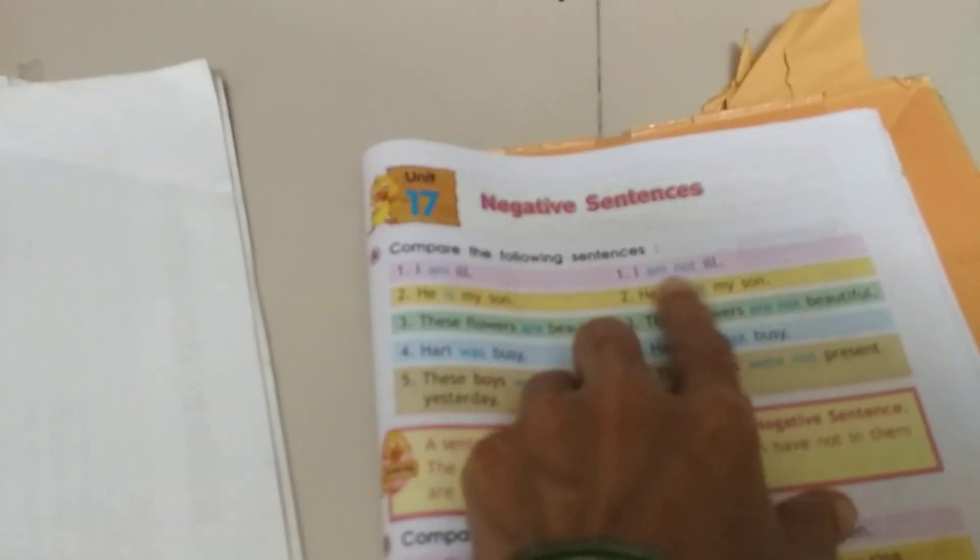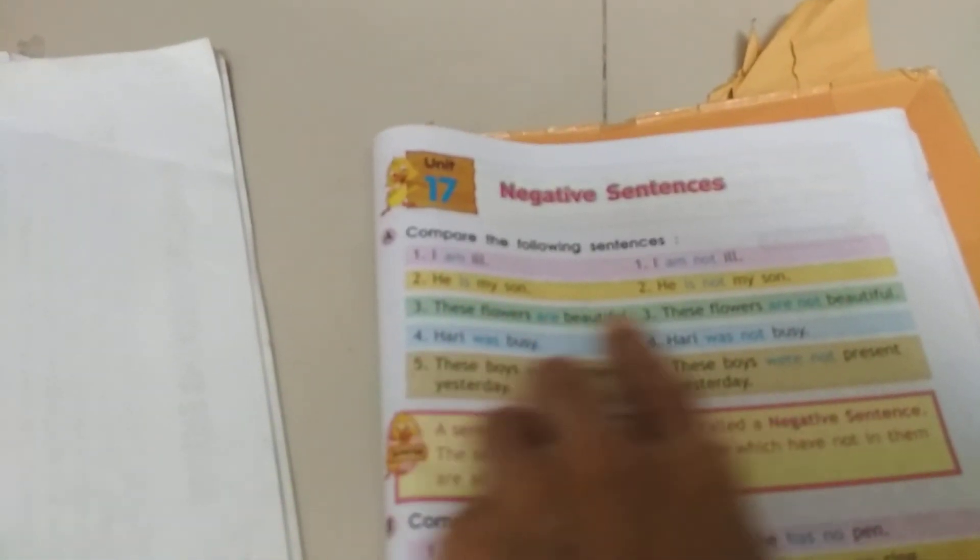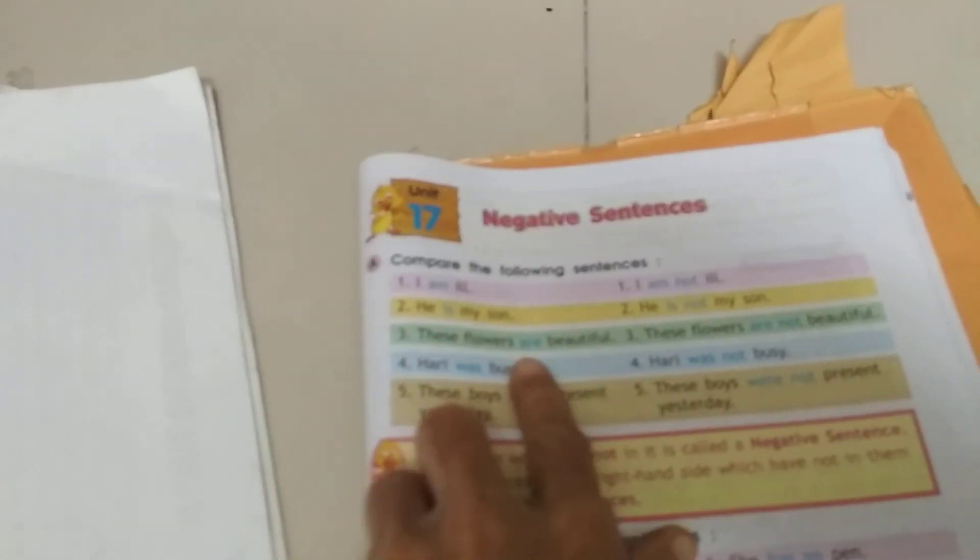Okay, now let's go to the negative sentence. Types of negative sentence. I am well. I am not ill. He is my son. He is not my son. These flowers are beautiful. These flowers are not beautiful.